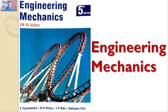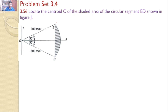Welcome to RK Tutorials, Solutions to Engineering Mechanics, 5th edition by S. Timoshenko. In this tutorial, we will discuss problem set 3.4, problem number 3.56: locate the centroid C of the shaded area of the circular segment BD shown in the figure.